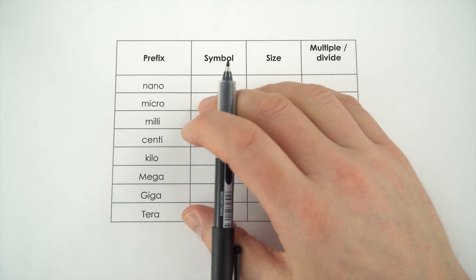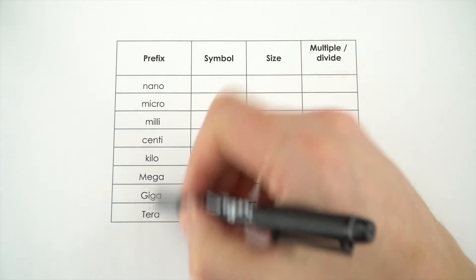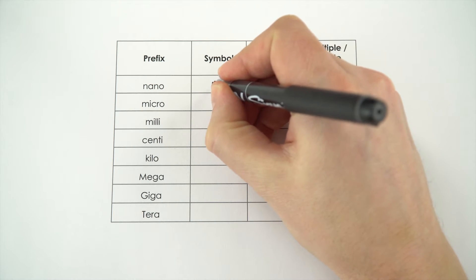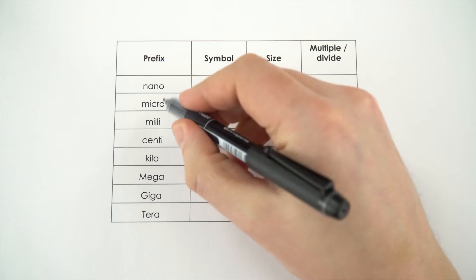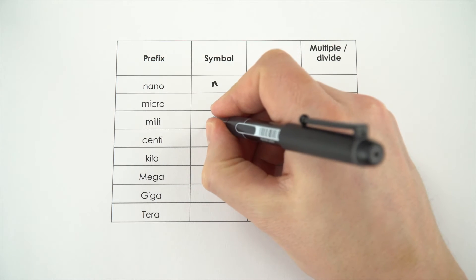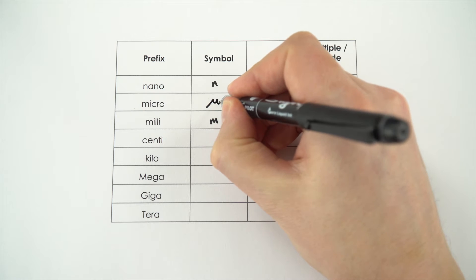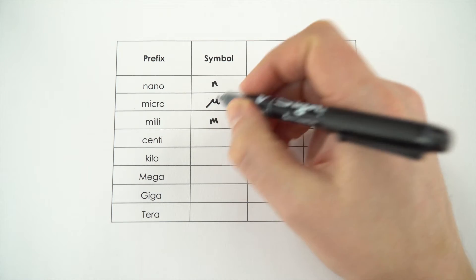So these are some of the prefixes used in physics. We're going from really small to really big. Now if we think about nanotechnology, we've got a little n to represent nano, and then we have micro. Now we already use m for milli, so for micro we use a Greek letter mu, which is like a u with a bit on the end.